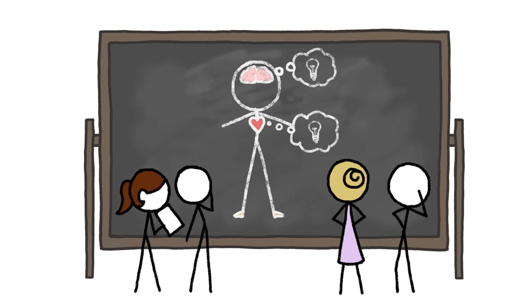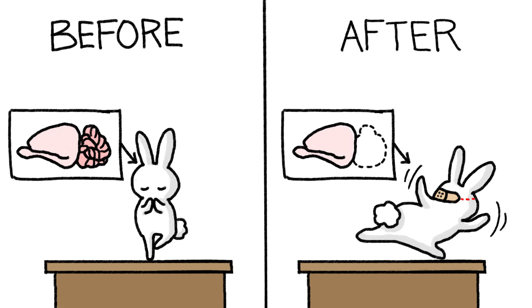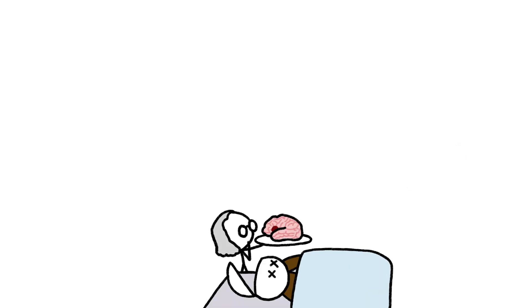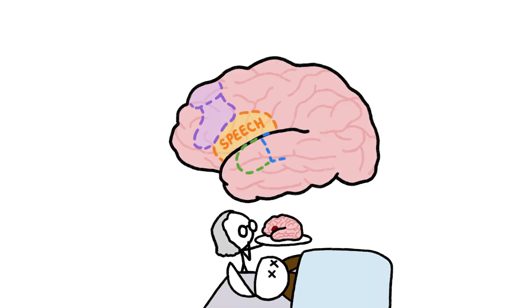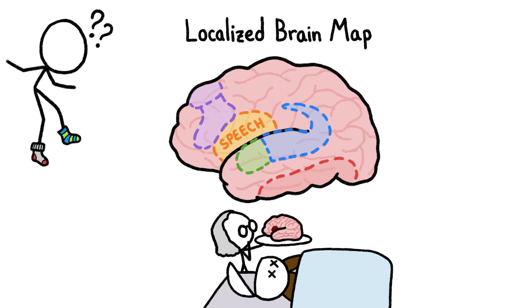Back then, scientists had only recently accepted the idea that we think with our brains rather than our hearts, and some experiments with animals had convinced them that different parts of the brain were dedicated to different mental jobs. Broca's lesion method seemed like the way to draw up a localized map of brain activity in humans. Doctors found patients with specific cognitive deficits and then matched those deficits up with the damaged parts of their brains.